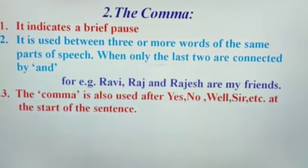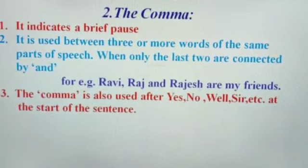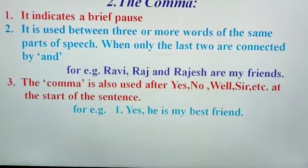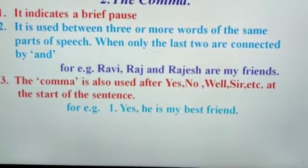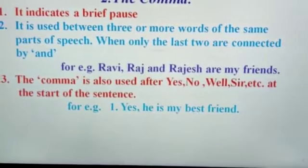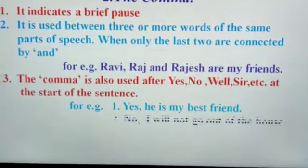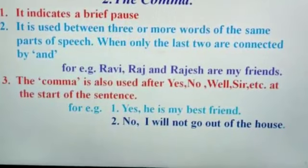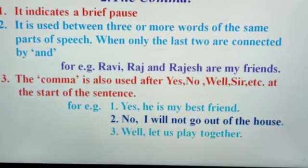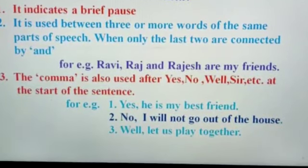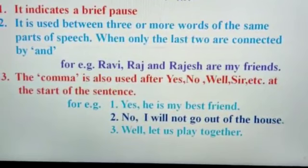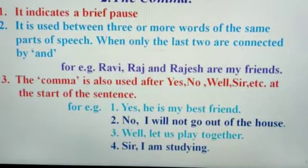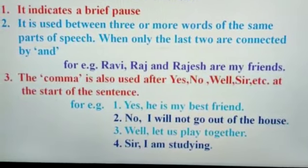The comma is also used after 'yes', 'no', 'well', 'sir', etc. at the start of a sentence. For example: 'Yes, he is my best friend.' After 'yes' there is a comma. 'No, I will not go out of the house.' After 'no' there is a comma. 'Well, let us play together.' After 'well' there is a comma. 'Sir, I am studying.' After 'sir' there is a comma.